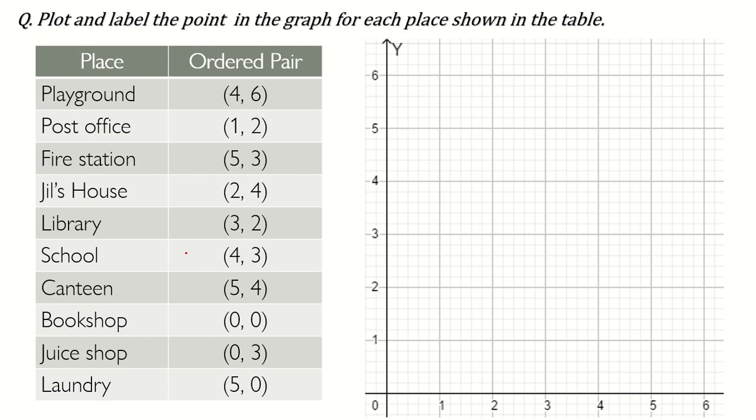Now, this question: plot and label the point in the graph for each place shown in the table. Whenever you have ordered pair like this, first value is of X and second value is of Y. So playground, where is 4? 4 is here and 6 is where? 1, 2, 3, 4, 5, 6. This is 4, 6. And what is the name? Name is playground.